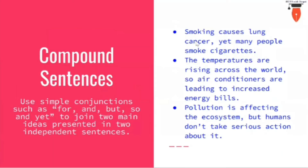The first type of sentences you can construct are known as compound sentences. In these sentences, you will use words like for, and, but, so, yet to join two main ideas that are presented in two independent sentences. When we have two ideas coming together, we need to build a connection between the two to enhance the complexity of our sentence.